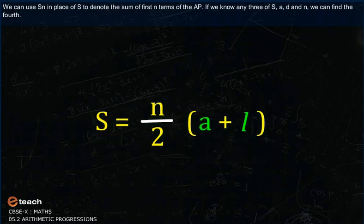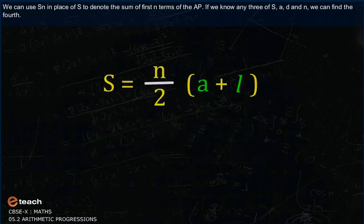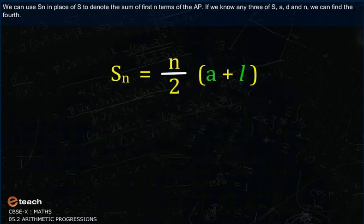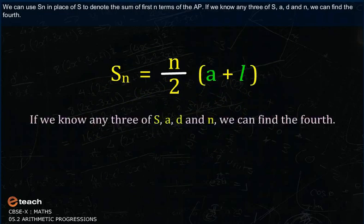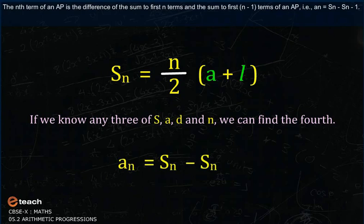We can use Sn in place of S to denote the sum of first N terms of the AP. If we know any three of Sn, A, D, and N, we can find the fourth. The Nth term of an AP is the difference of the sum to first N terms and the sum to first (N minus 1) terms: An = Sn minus S(n-1).